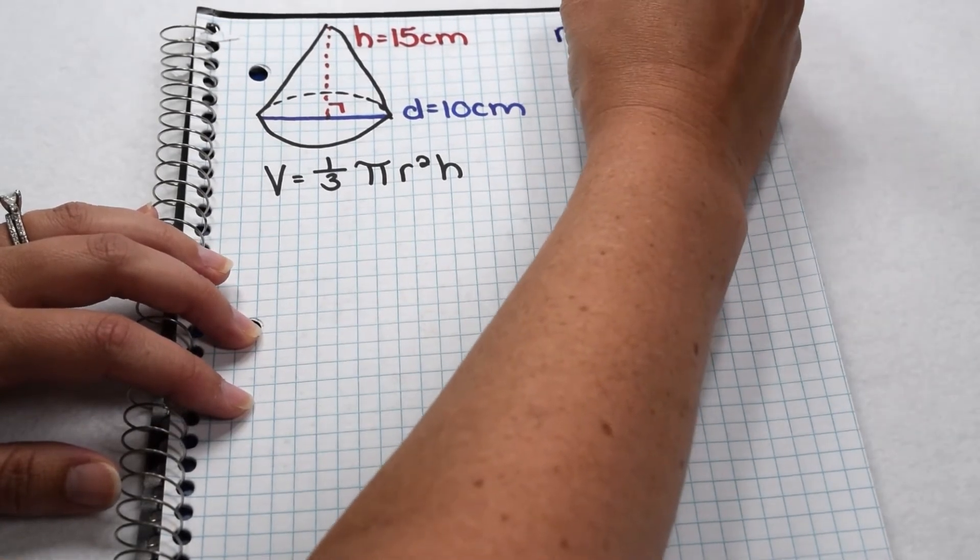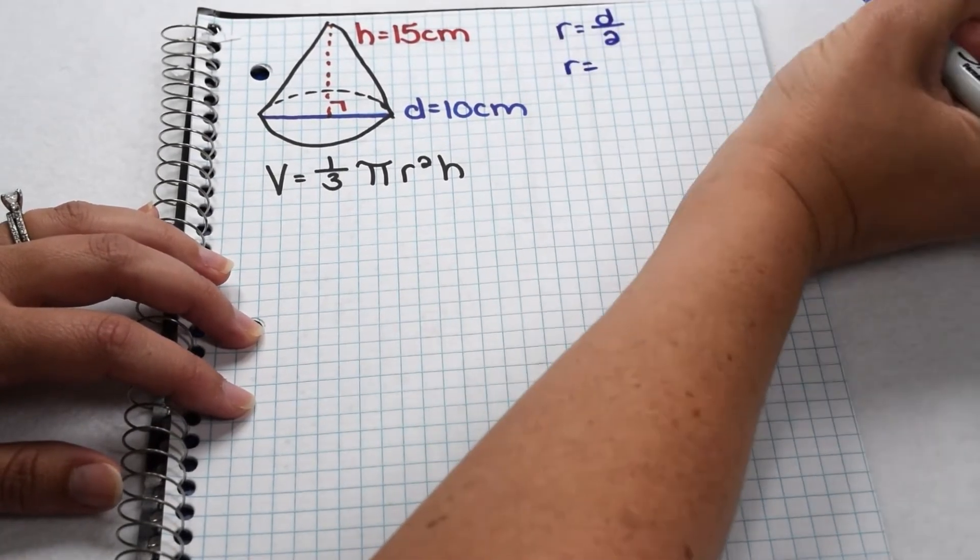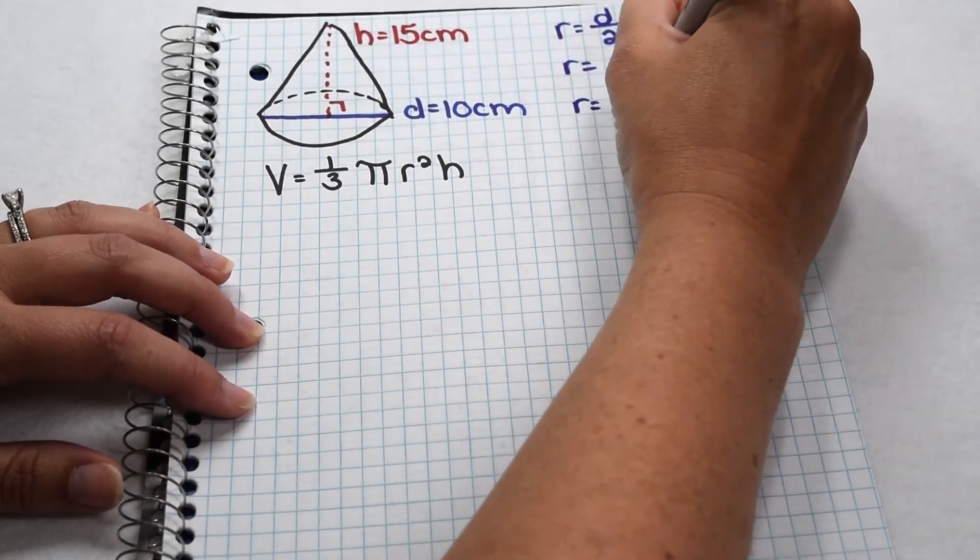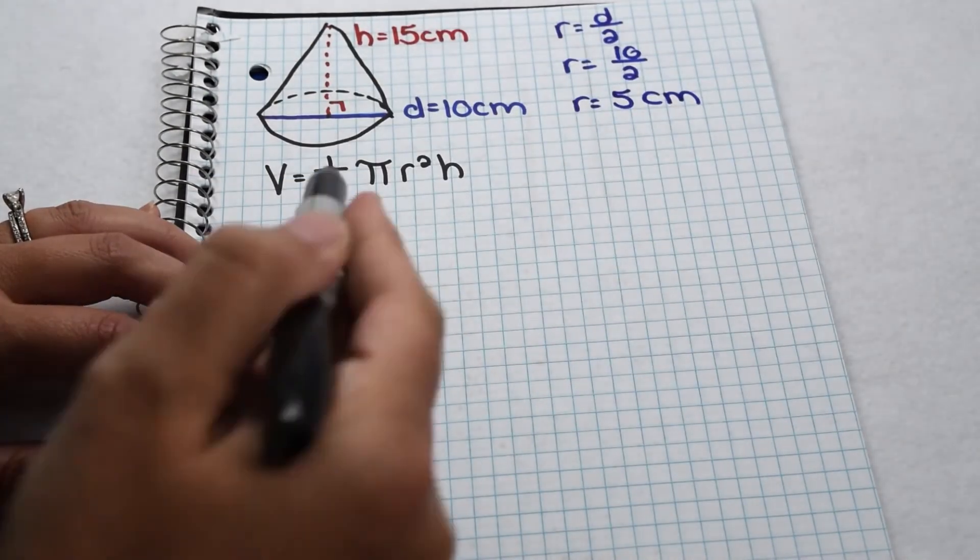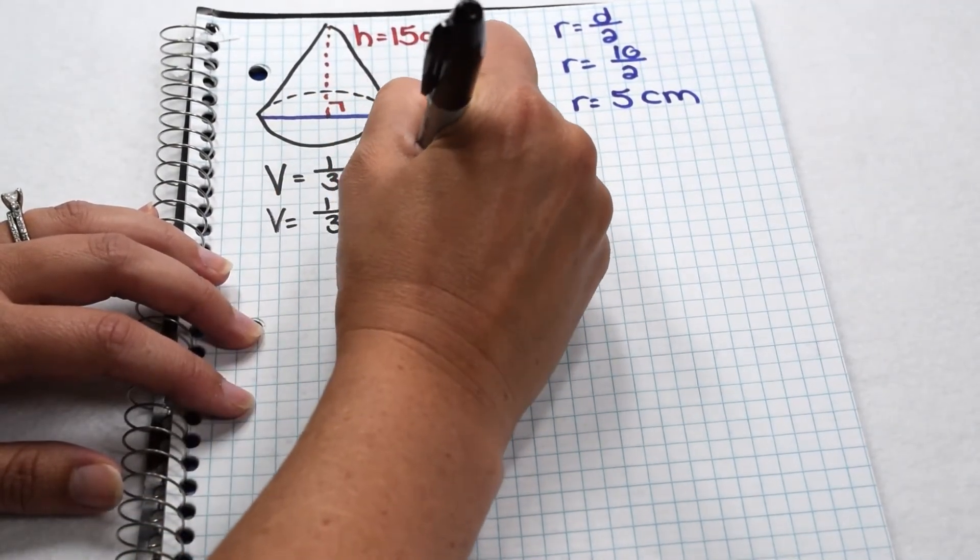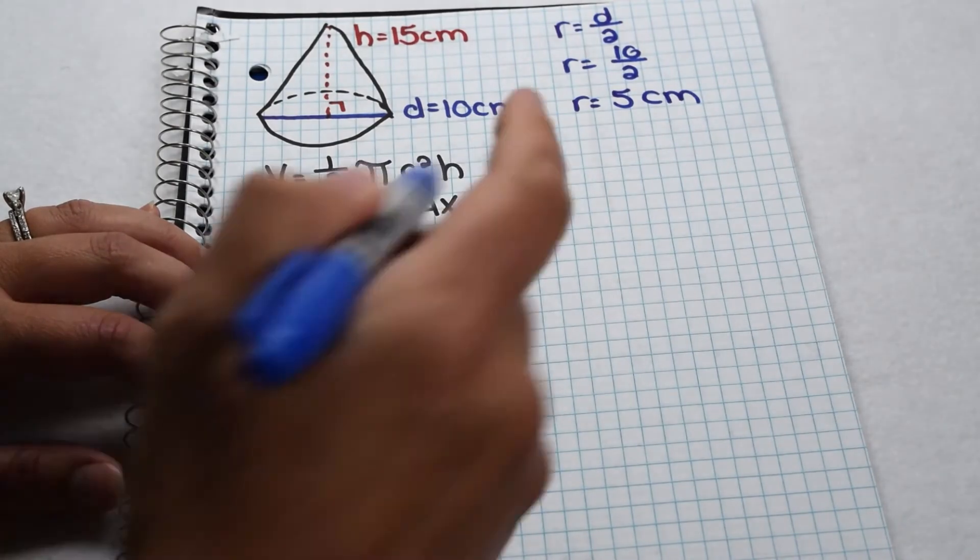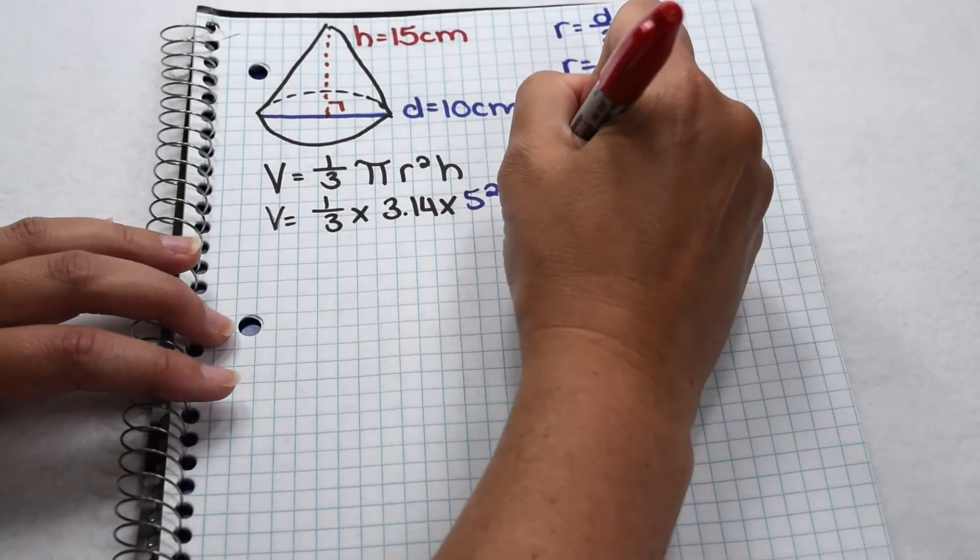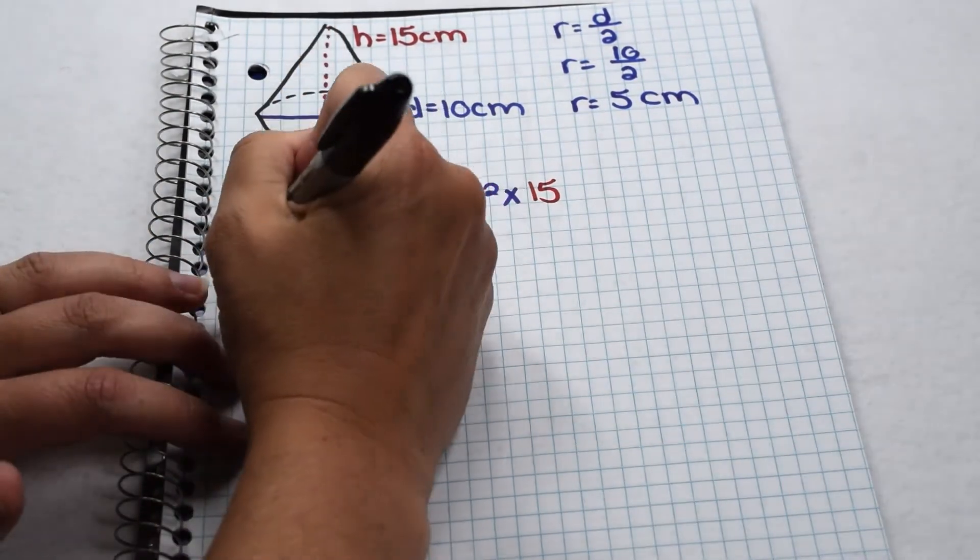On our cone, they told us diameter. So first thing we have to do is find the radius. Radius is always half the diameter. Here, we're going to need to take 10 divided by 2. 10 divided by 2 is 5. So on this cone, our radius is 5 centimeters. Now we can substitute that into our equation. So volume is going to be one-third times 3.14 times 5 squared for our radius times 15 for the height of our cone.